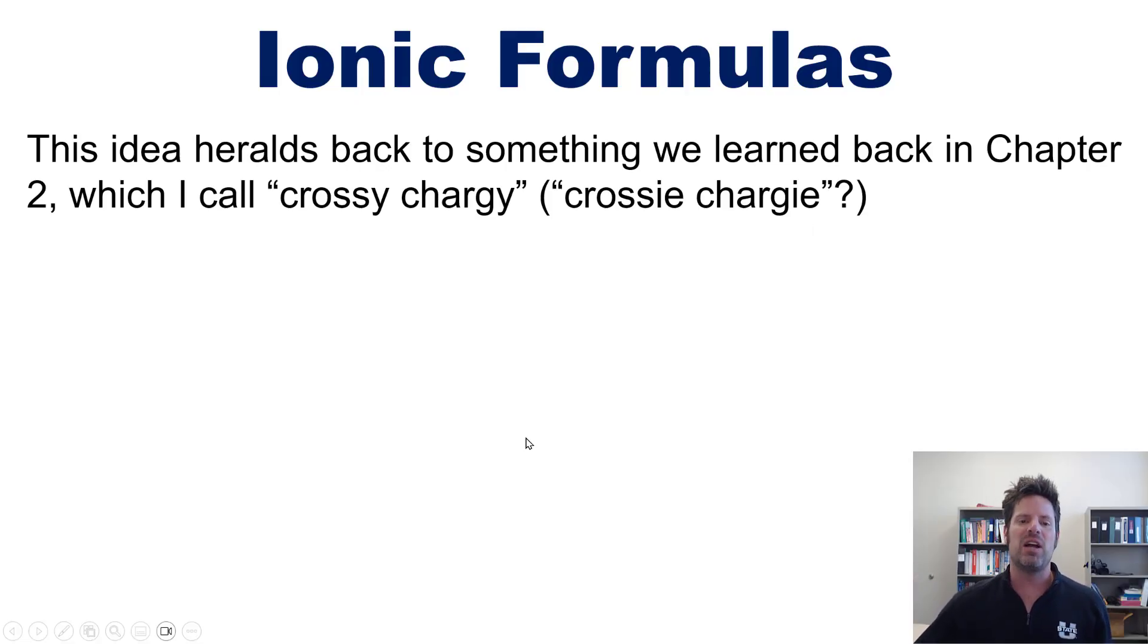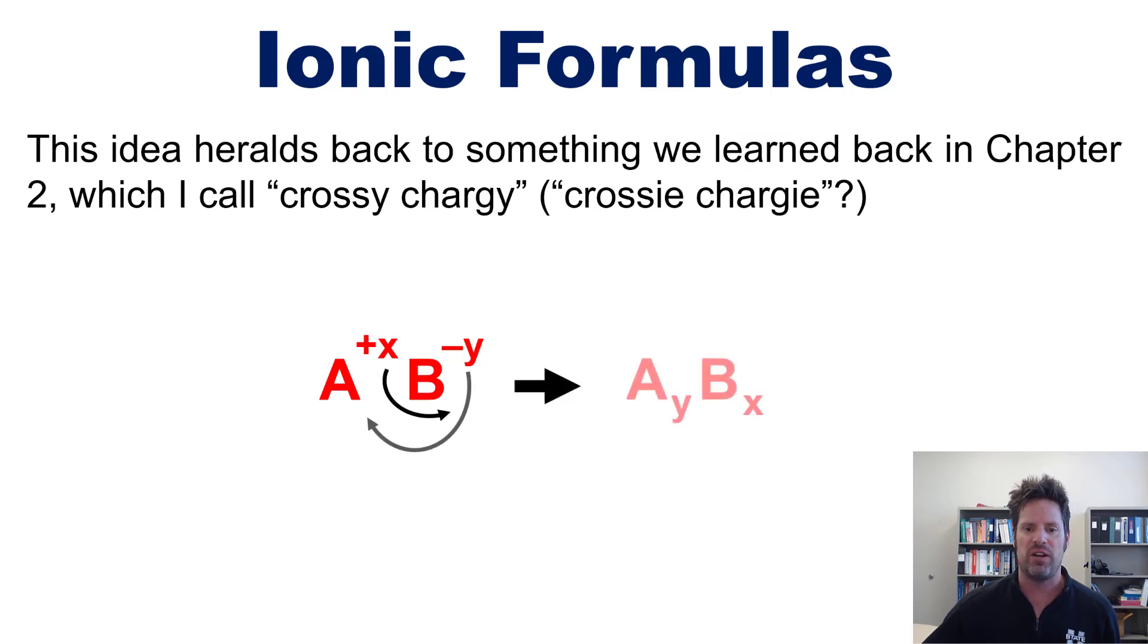Here's how it works though: I've got cation A with a charge of +x, anion B with a charge of -y. In order to figure out the final ionic formula that they will make when they combine, I just grab x, put it down there, and y, and put it down there. That gives me the final formula of AyBx in which the cation combined charges will cancel out the anion combined charges.